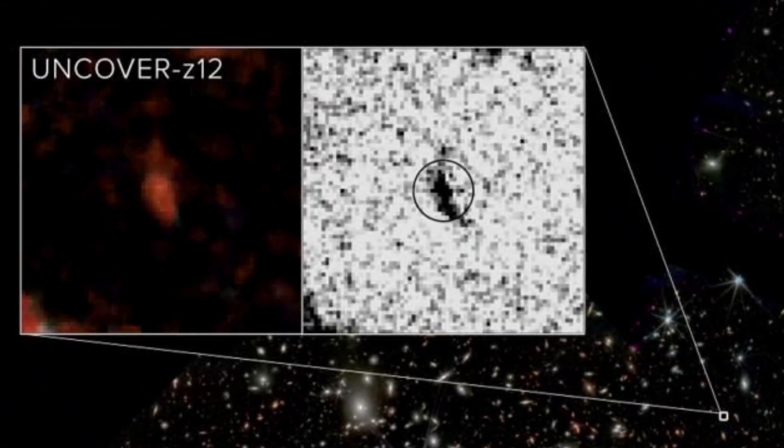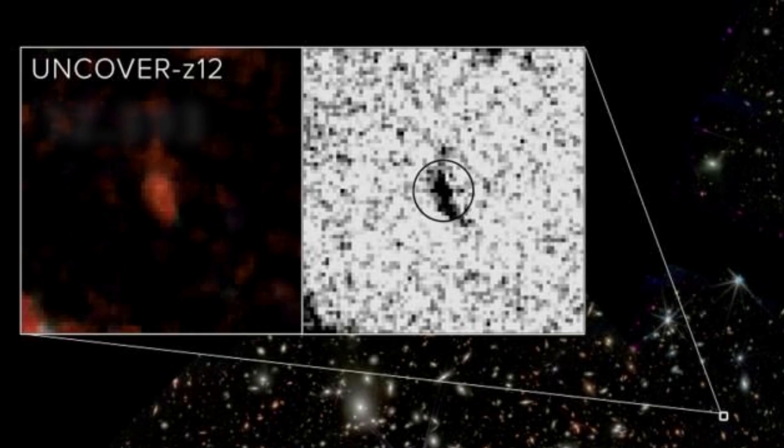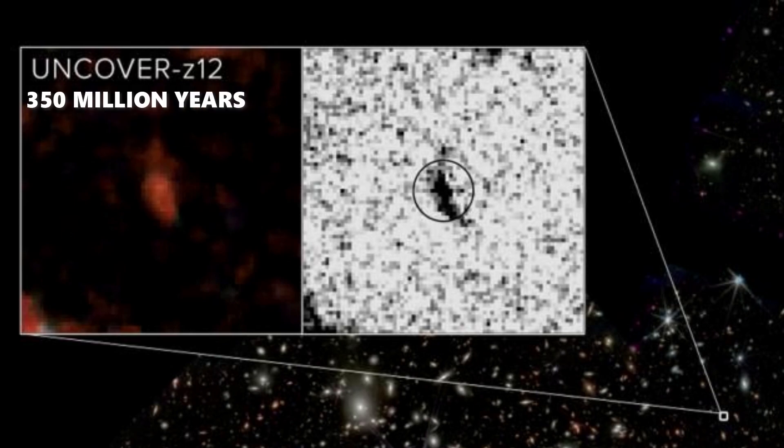Uncover Z-12, the other recently discovered galaxy, has a redshift of 12.393, putting it only 350 million years after the Big Bang.